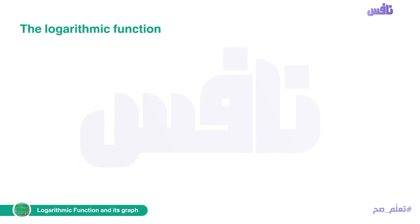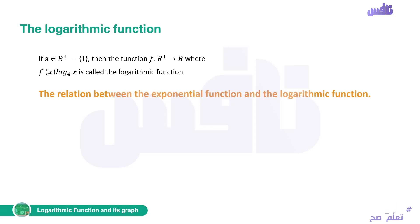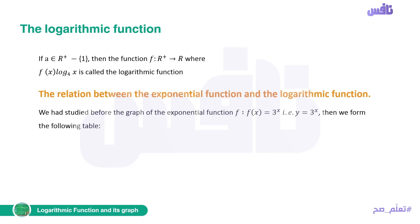The logarithmic function: if a belongs to the positive reals except 1, then the function f from the positive reals to the reals, where f(x) equals log base a of x, is called the logarithmic function. Now let's discover the relation between the exponential function and the logarithmic function. We previously studied the graph of the exponential function f where f(x) equals 3 to the power of x.